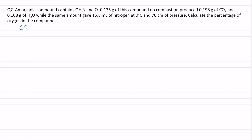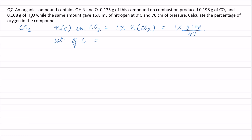The molecular formula of carbon dioxide is CO₂. One mole of CO₂ contains one mole of carbon, so moles of carbon = 1 × (weight of CO₂ / molecular weight of CO₂) = 0.198 / 44. Therefore, weight of carbon = (0.198 / 44) × 12 = 0.054 gram.